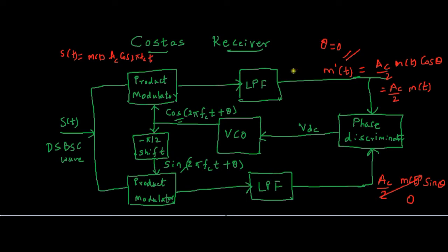So let us see what happens when θ ≠ 0. When θ = 0, we got our message signal at the I-channel and the Q-channel output was 0. But it is not always possible for the local oscillator to generate a carrier with the same frequency and same phase as the transmitter carrier. When θ ≠ 0, sin(θ) ≠ 0, so there will be some component at the Q-channel as well.